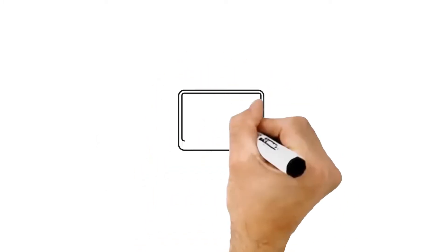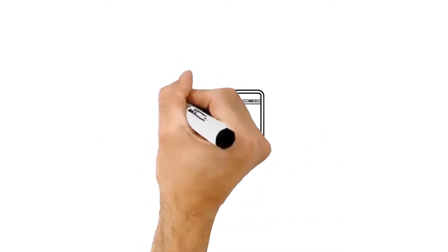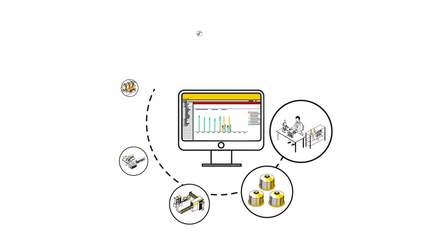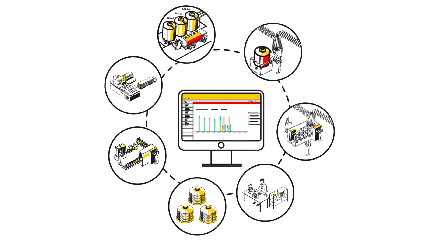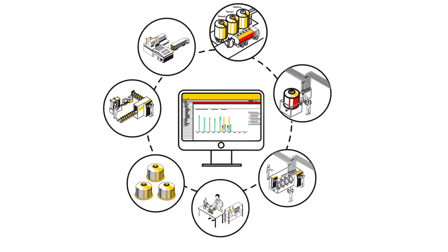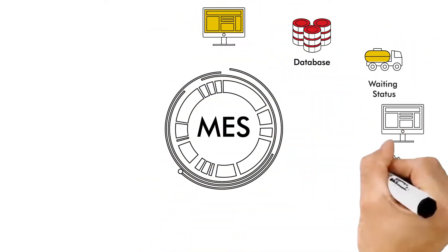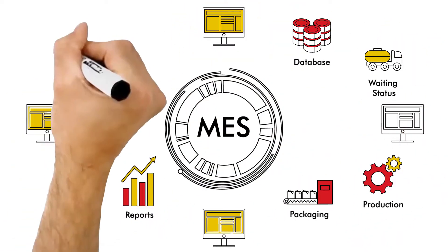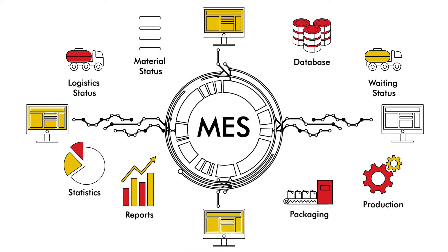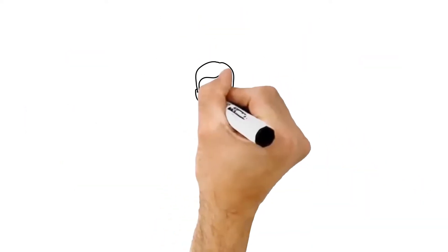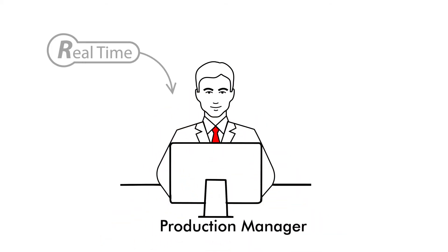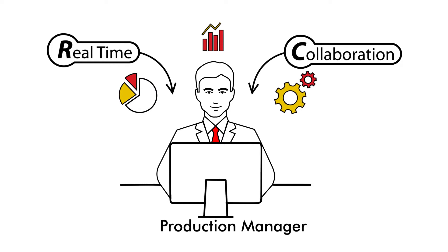MES provides information that helps manufacturing decision-makers understand how current conditions on the plant floor can be optimized to improve production output. The main goal of an MES is to ensure effective execution of the manufacturing operations and improve production output, providing transparency and actionable insights, enabling better real-time decision-making, better collaboration, and in some cases, automation.